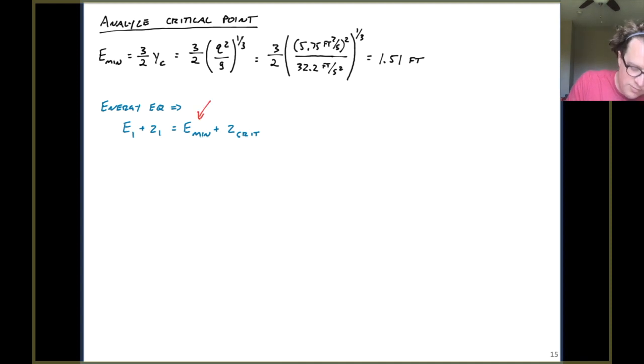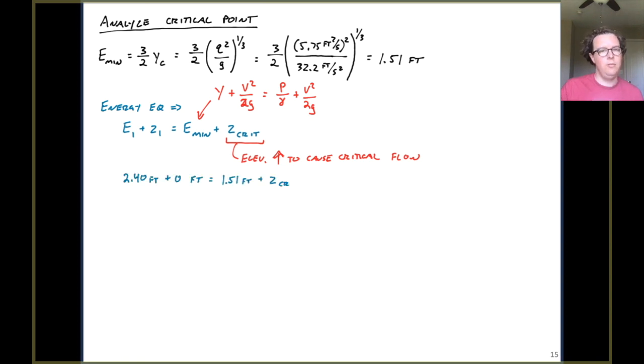And if you're feeling a little unhappy about this, just remember that that specific energy represents the flow depth plus the velocity head, or put another way, the pressure head plus the velocity head. So that's our energy equation assuming we were at critical flow. And the question here would be, did we raise the bed enough to cause critical flow to occur? So we can plug in values that we know. We know our specific energy at point one was 2.40 feet. We know the bed elevation at point one was zero, our datum. We know the critical energy is 1.51. And so what was the bed elevation? How high would that bump have to be to push us around to supercritical flow? And what we can do is solve that for 0.89 feet.